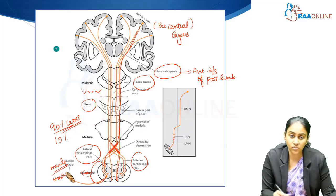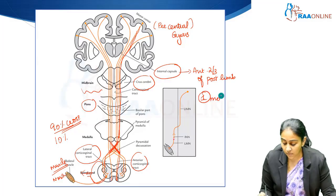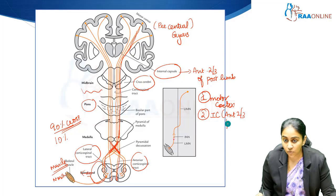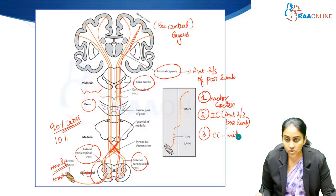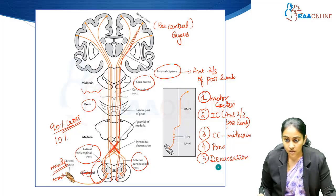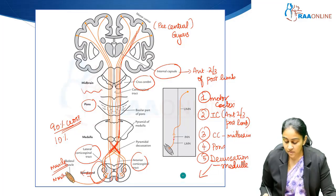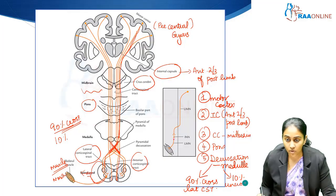That is the motor pathway. You have the motor cortex in the precentral gyrus; the next stop to remember is the internal capsule — the anterior two-thirds of the posterior limb of the internal capsule. The next stop is the crus cerebri in the midbrain, then through the pons and the medulla, and finally the decussation happens at the level of the medulla oblongata — the pyramidal decussation. 90% cross over to the opposite side to become the lateral corticospinal tract; 10% are uncrossed and contribute to the anterior corticospinal tract.